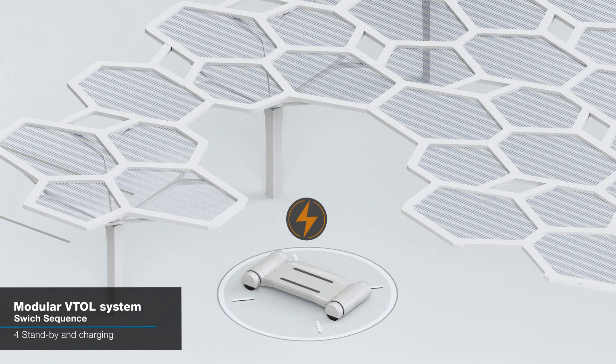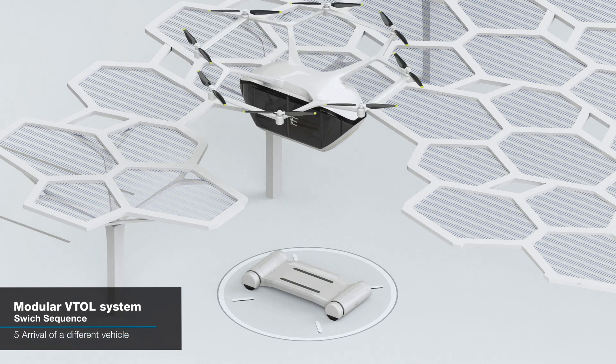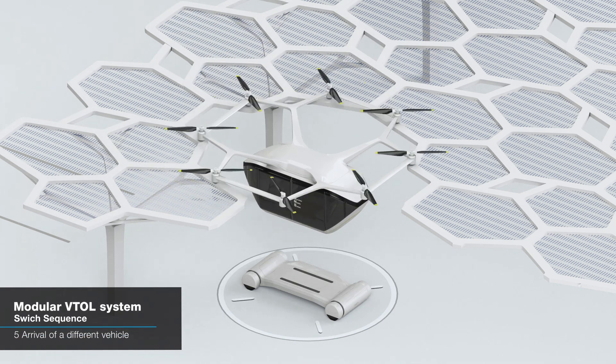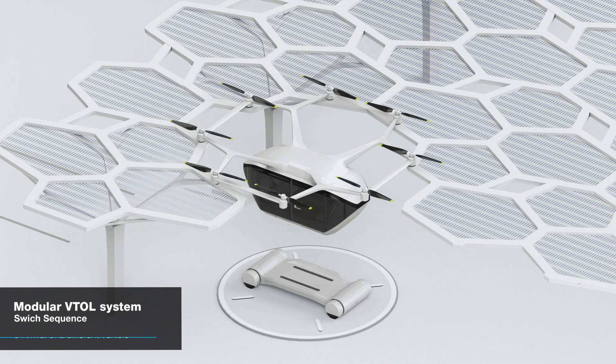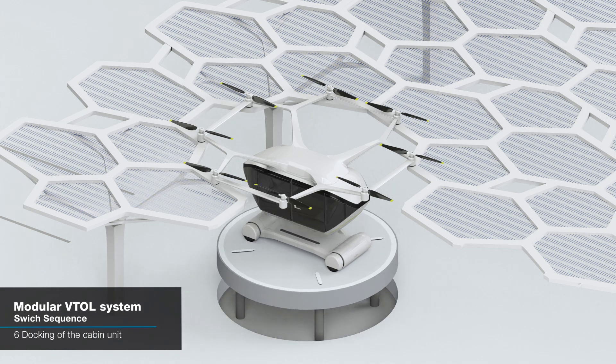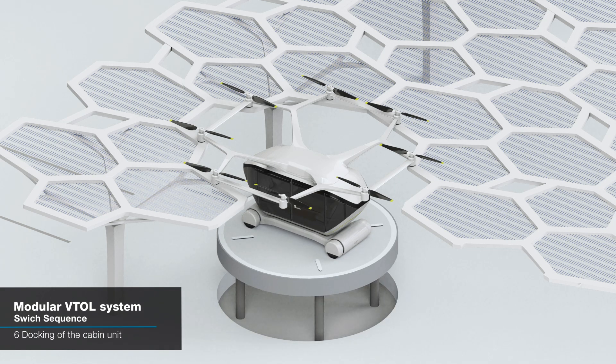The platform goes down and charges the wheel unit. Another VTOL lands at the joining point on the pergola. The platform raises to combine the wheel unit and the docked VTOL.